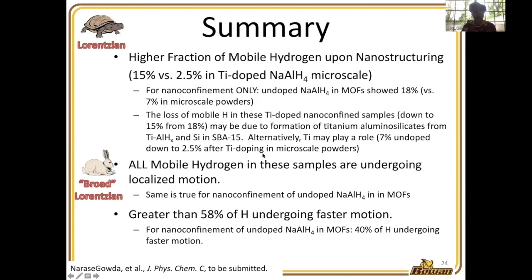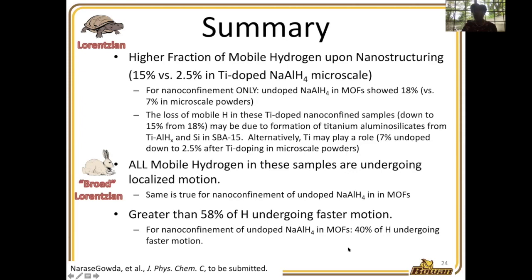We learned from this study that all the mobile hydrogen in these samples had a localized motion, which is also true for nano-confined sodium aluminum hydride in the metal organic framework. We also learned that greater than 58% of the hydrogen is undergoing the faster motion in the SBA-15 system, compared to 40% in the undoped samples when nano-confined in MOFs.